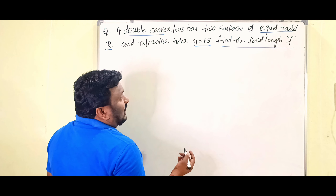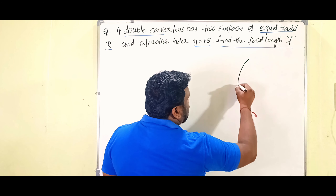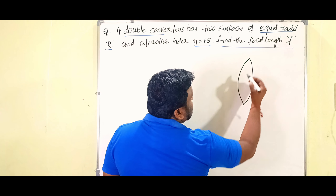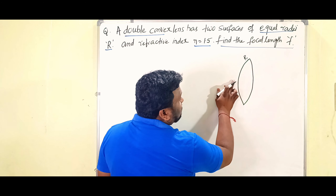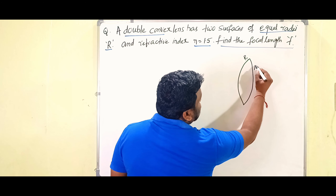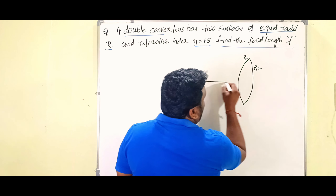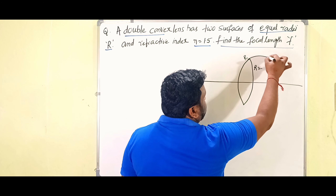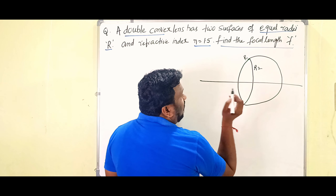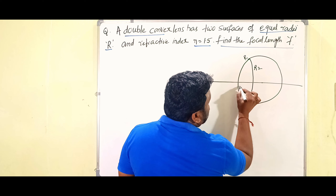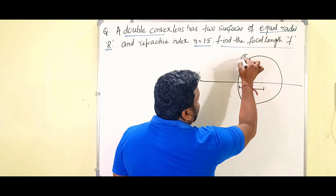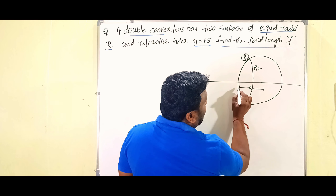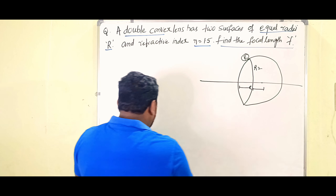To solve this, you need to understand the radii of curvature of a convex lens. This is a biconvex lens. The first refracting surface has radius of curvature r1 — the distance from the surface to the center of curvature of that sphere.